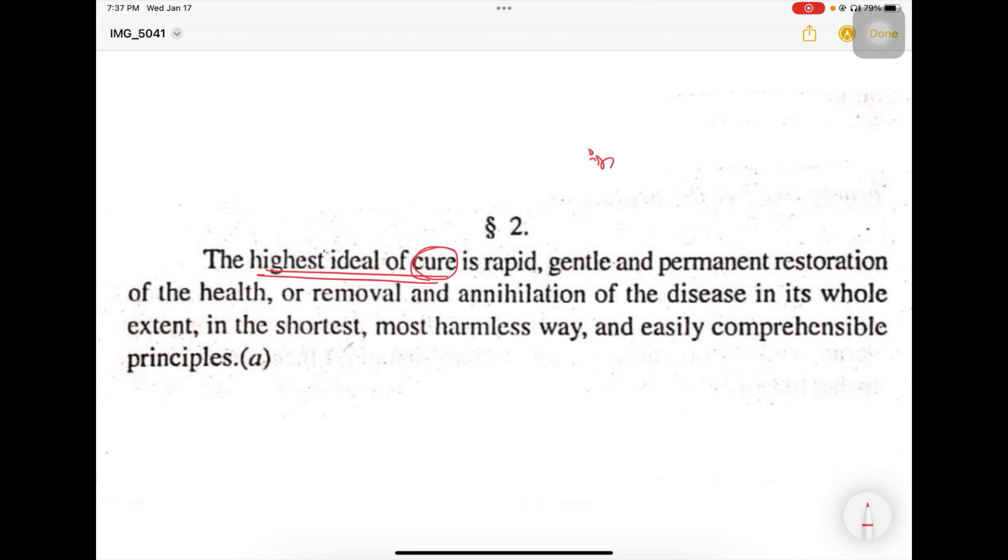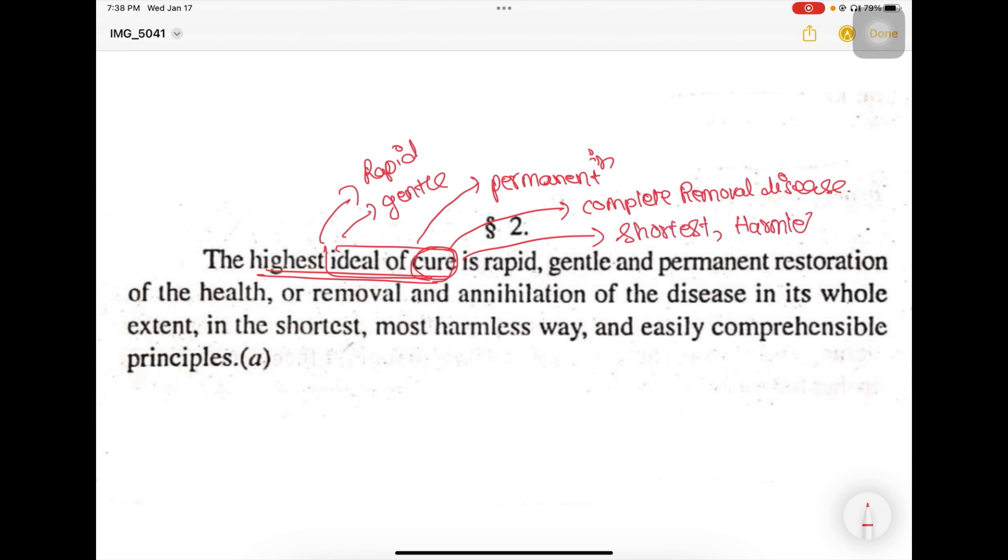Let us have a look at that. So he says an ideal cure must be rapid. It must be gentle. It must be permanent. And it has to be complete removal of the disease. Of course, shortest, harmless, and based on easily comprehensible principles. Which is written over here, based on easily comprehensible principles. So these are the qualities of an ideal cure.